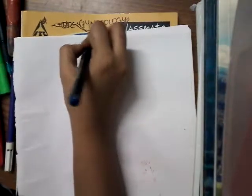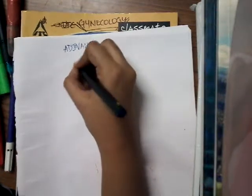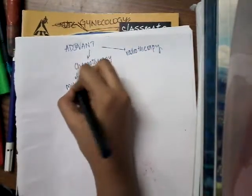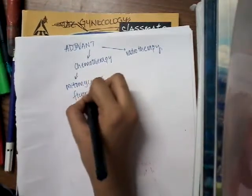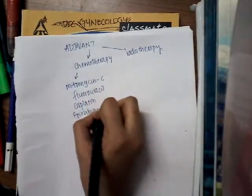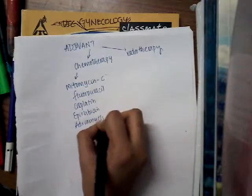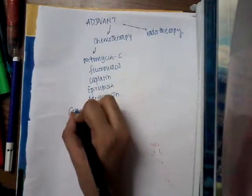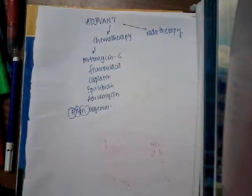For early gastric carcinoma, endoscopic mucosal resection can be done. In adjuvant therapy, chemotherapy or radiotherapy can be used. Chemotherapy drugs include mitomycin C, fluorouracil, cisplatin, epirubicin, and adriamycin. There is also the FAM regimen: F is fluorouracil, A is adriamycin, and M is mitomycin C. Radiotherapy has no role.